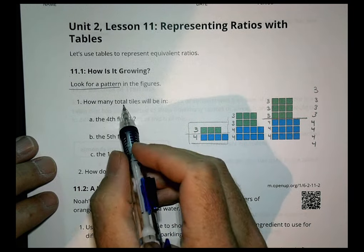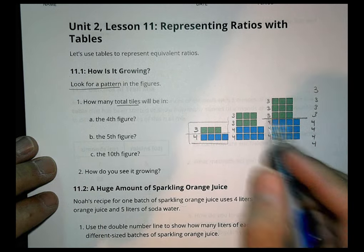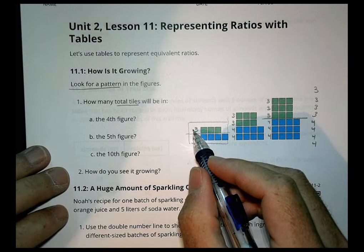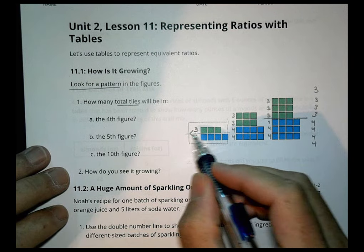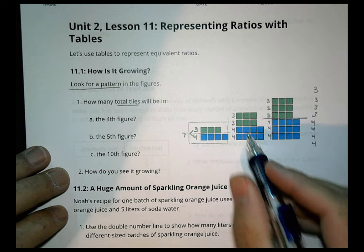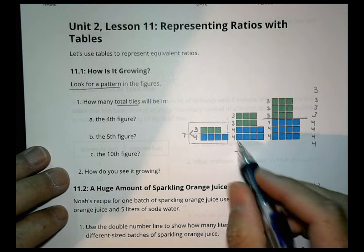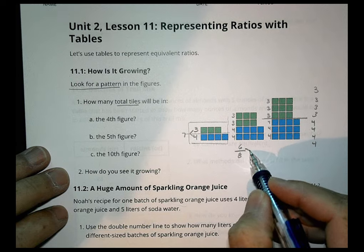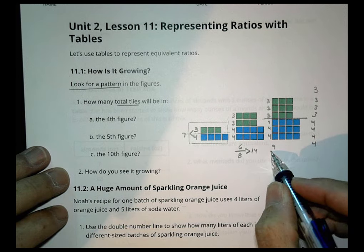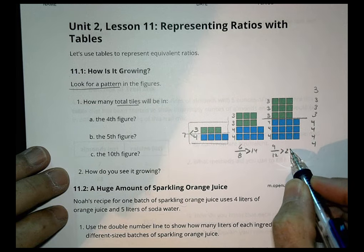Looking at how many total tiles will be in the fourth figure and so on, we can see that in the first group we have four plus three, which is seven. In the second we have six green and eight blue, so that becomes 14 total. In the third we have nine and twelve, which becomes a total of 21.